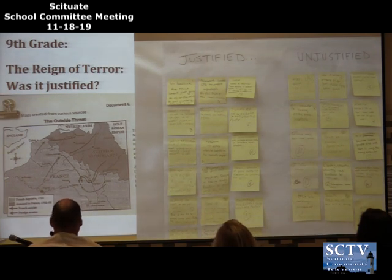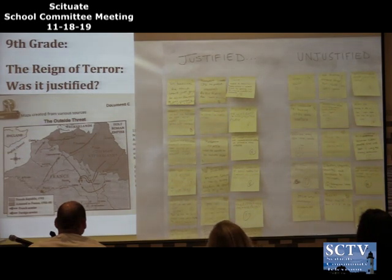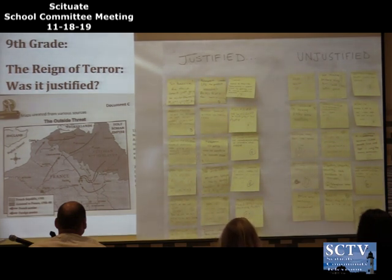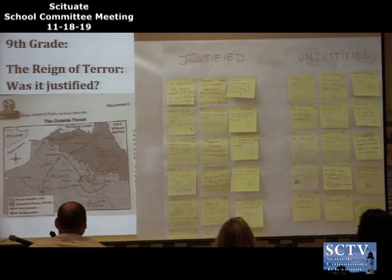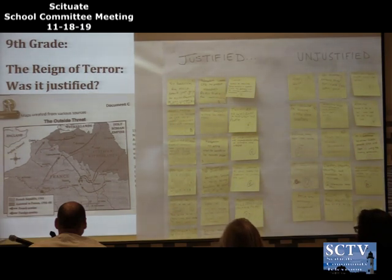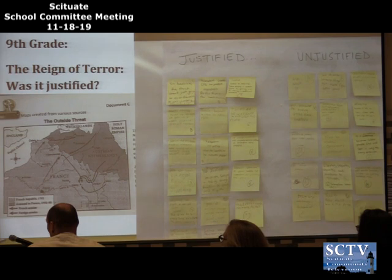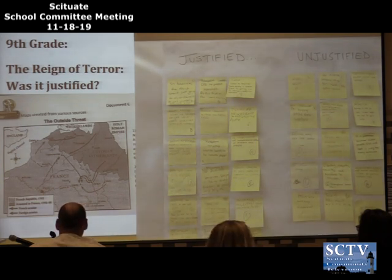Here is a brief example from the 9th grade: the question was 'Was the Reign of Terror justified?' Students used sticky notes to annotate documents and organized their notes to develop an answer. In 8th grade, the DBQ was 'Which idea in the Declaration of Independence was the most important?' In 10th grade, 'What caused the Salem Witch Trials?' In 11th grade, 'Should the United States have annexed the Philippines?' Those are just a few examples of document-based questions students did this year.